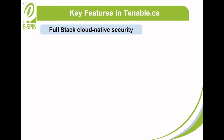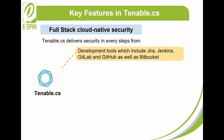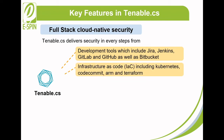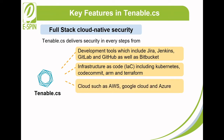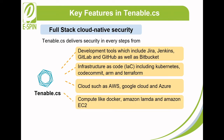Full-stack cloud native security — Tenable CS delivers security in every step from development tools which include Jira, Jenkins, GitLab, GitHub, and Bitbucket; infrastructure as code including Kubernetes, CodeCommit, ARM, and Terraform; cloud such as AWS, Google Cloud, and Azure; compute like Docker, Amazon Lambda, and Amazon EC2; and applications which include APIs.